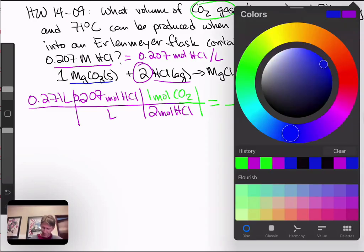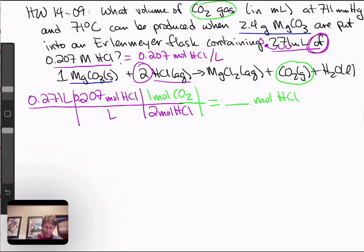Let's do blue for magnesium carbonate. We have 2.4 grams, and we have to get the molar mass of magnesium carbonate. Magnesium, I know I have a periodic table around here somewhere. There it is.